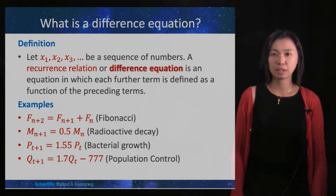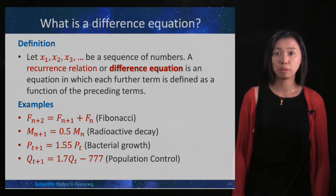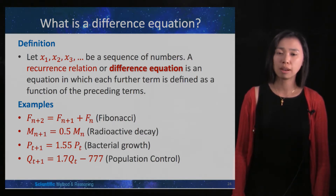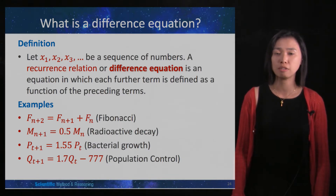Let x1, x2, x3 be a sequence of numbers — just like in a Fibonacci sequence you will have 1, 1, 2, 3, 5, 8, and so on. A recurrence relation or a difference equation is an equation in which each further term is defined as a function of the preceding terms.